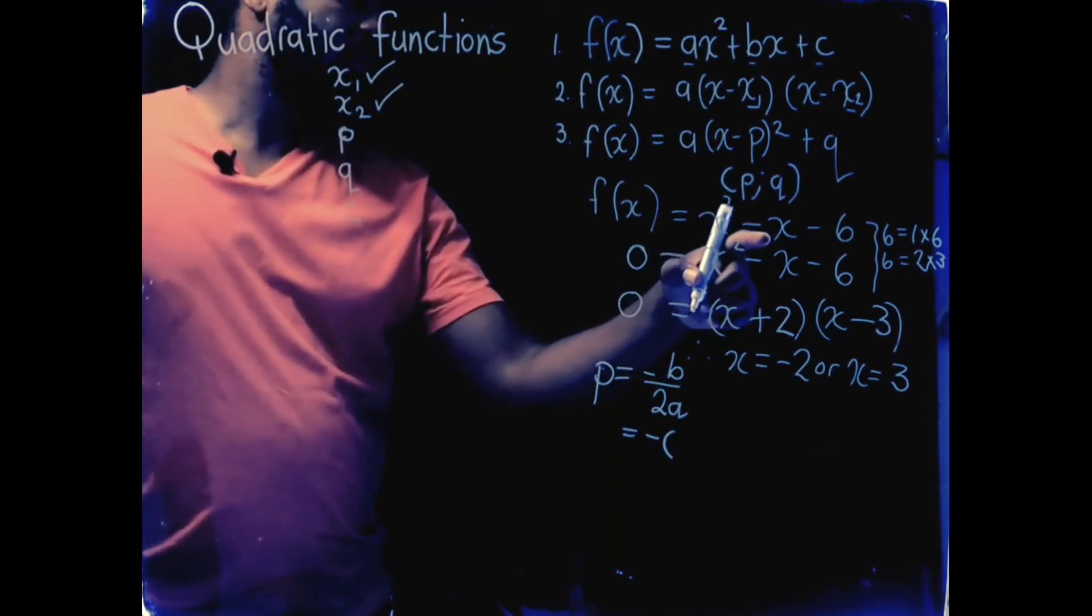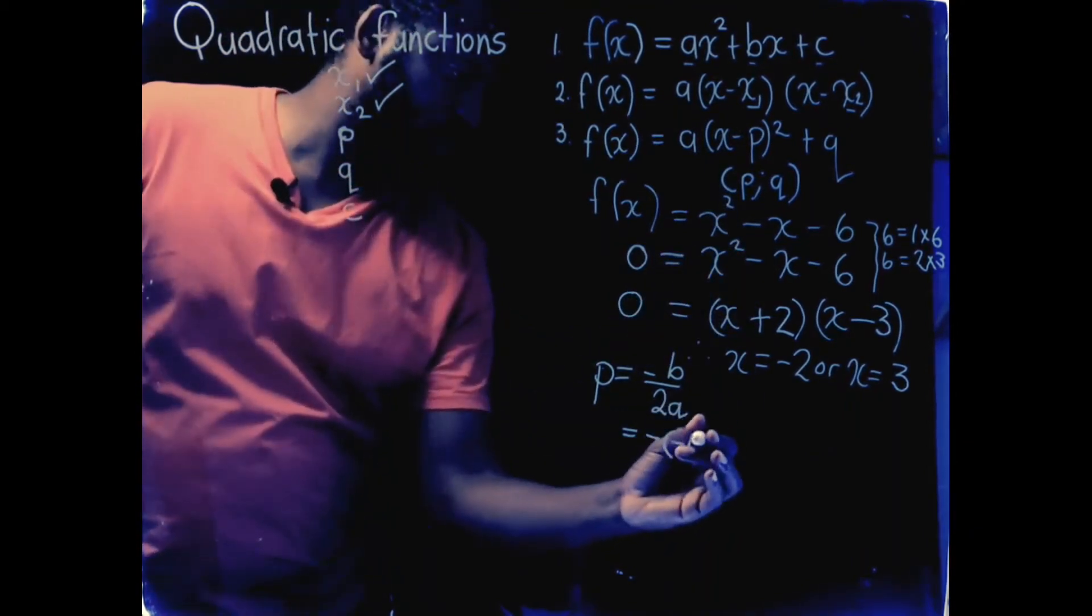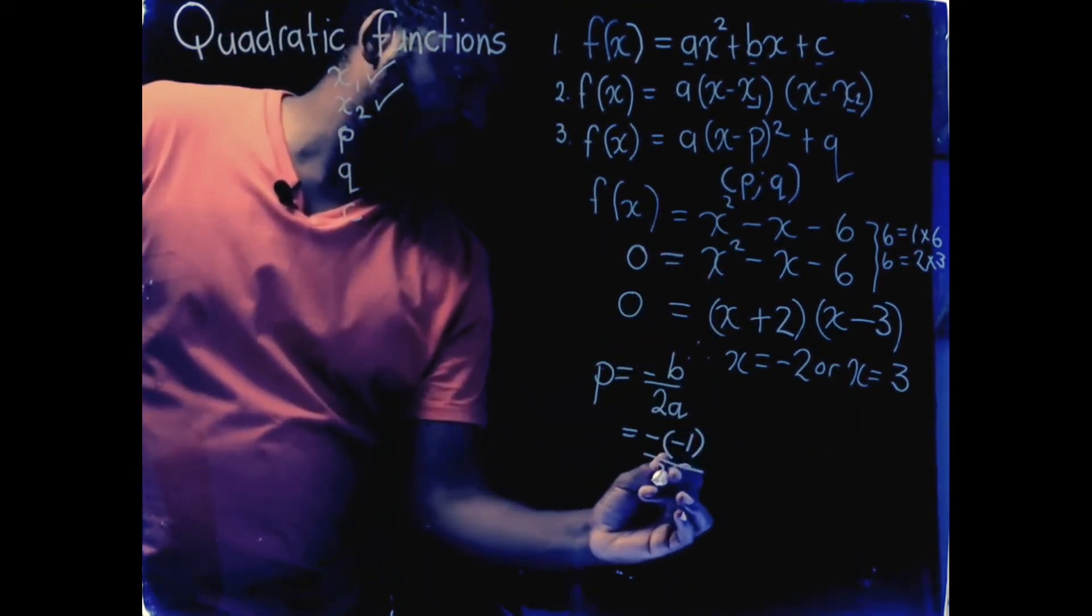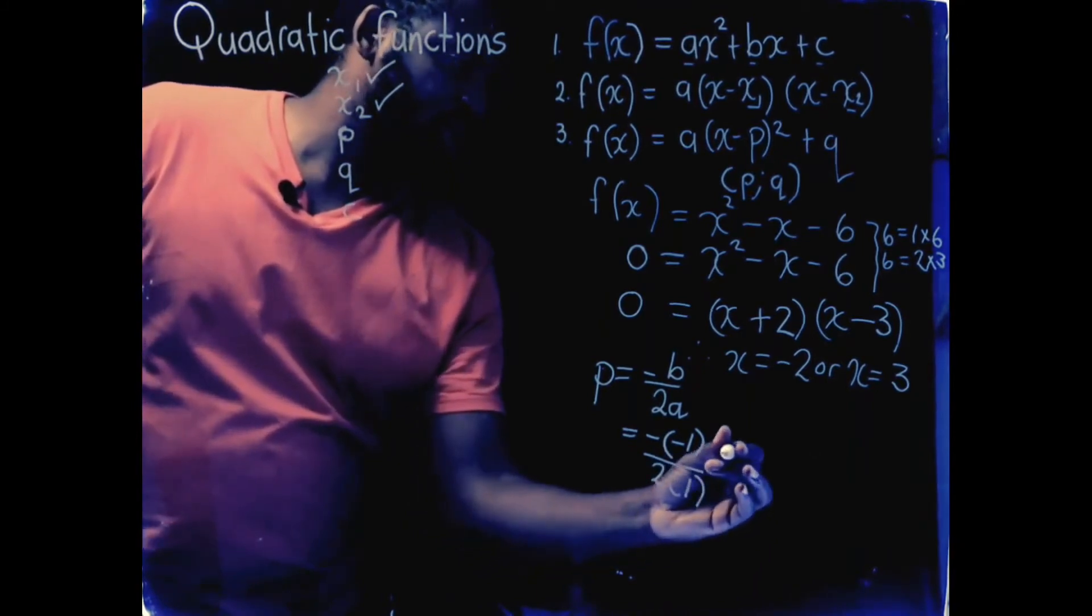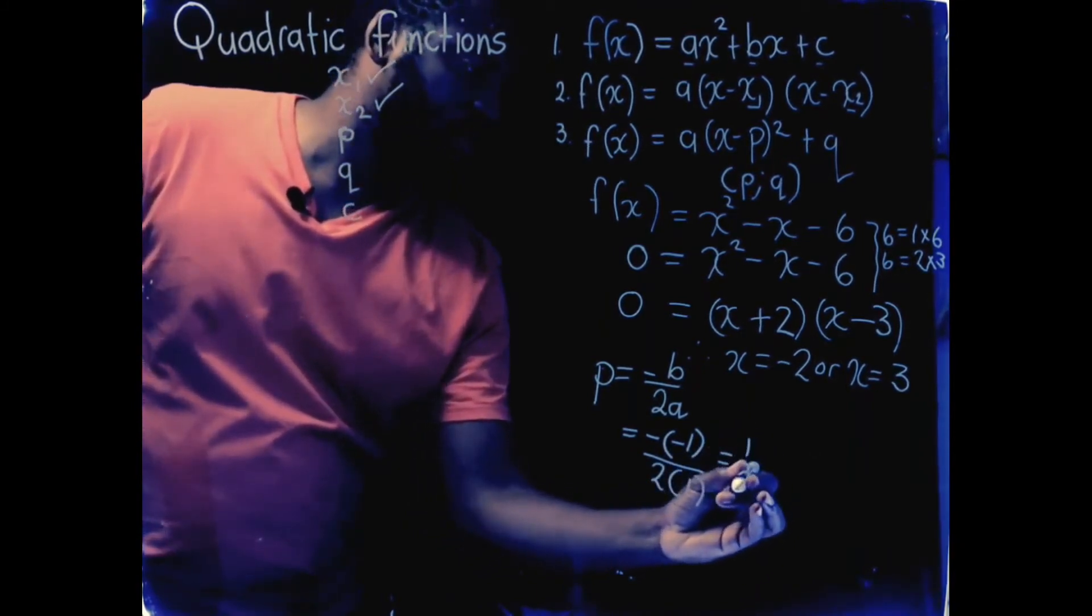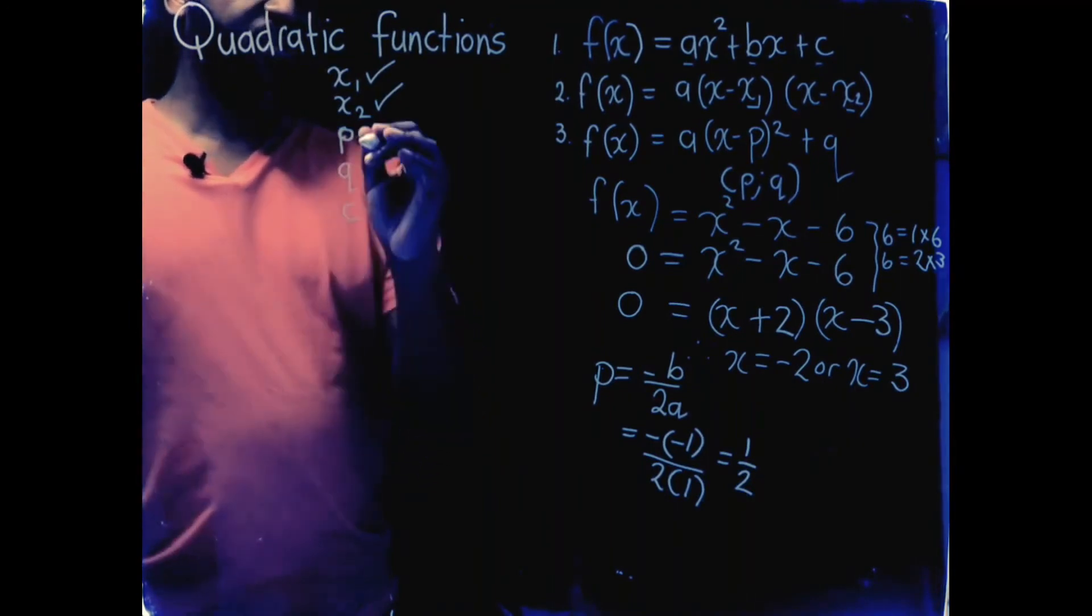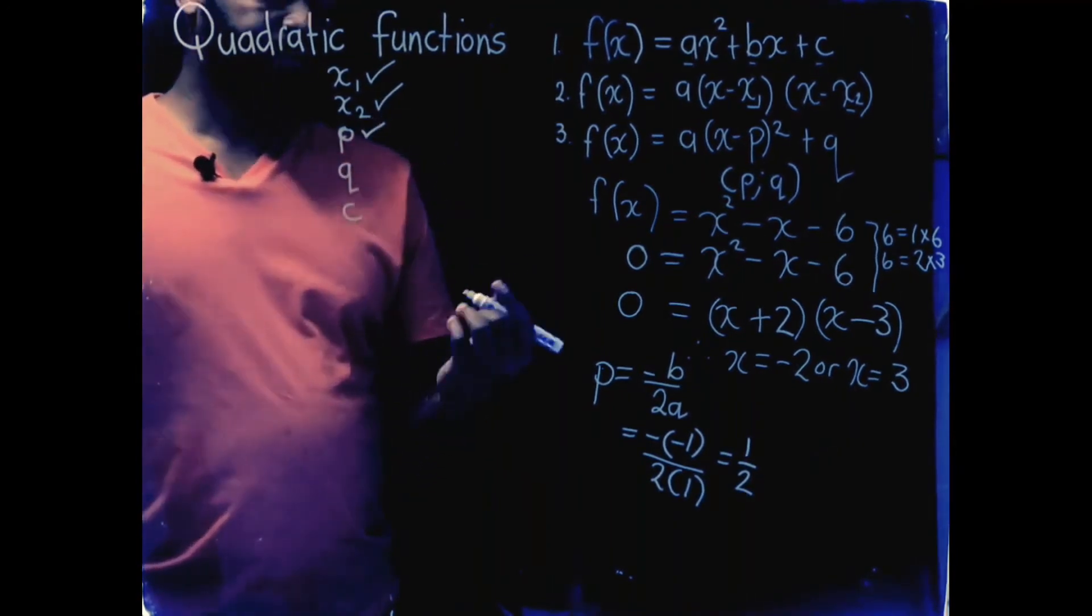So, the b there is minus 1. The a is also 1. This gives me a half. So, the p value is half.